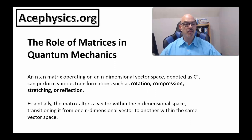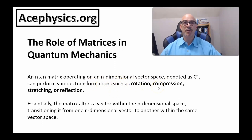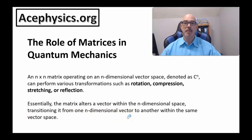An n-by-n matrix operating on an n-dimensional vector space denoted CN can perform various transformations such as rotation, compression, stretching, and reflection. Essentially, the matrix alters a vector within an n-dimensional vector space, transitioning it from one n-dimensional vector to another n-dimensional vector within the same space.